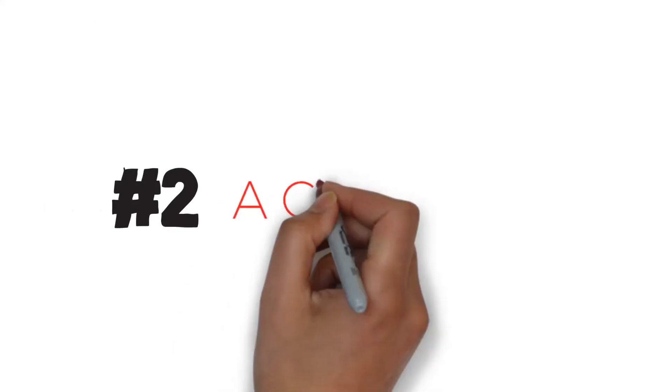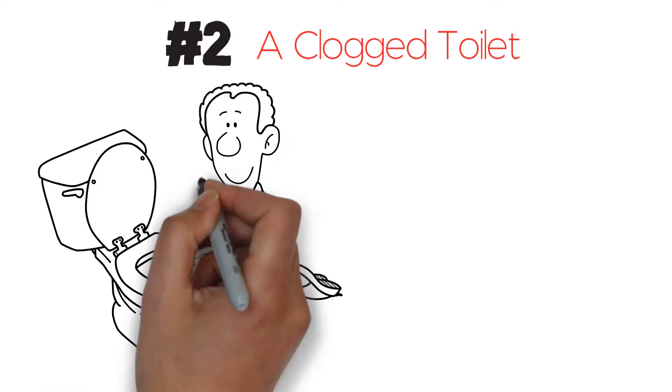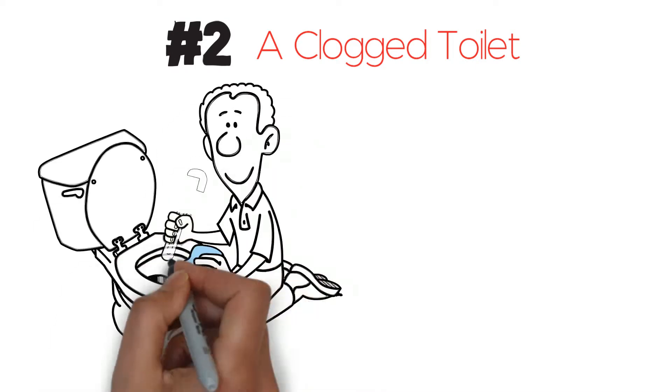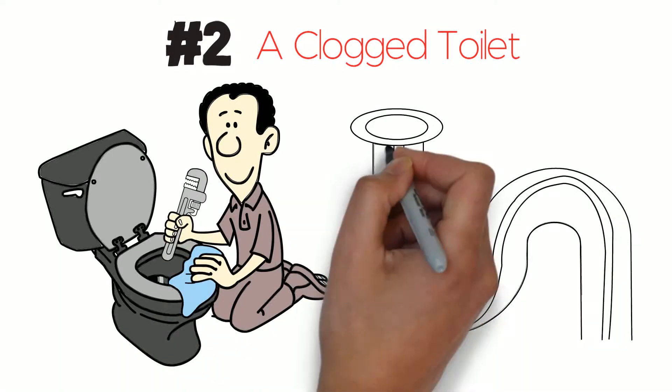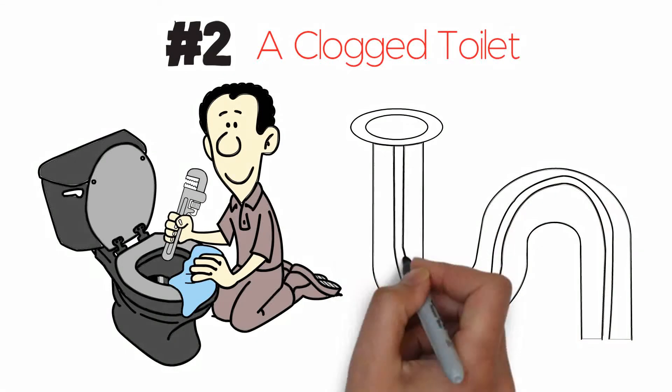2. A Clogged Toilet. A clog is a blockage that has occurred in the S-shaped trap of the toilet or somewhere along the drain line.